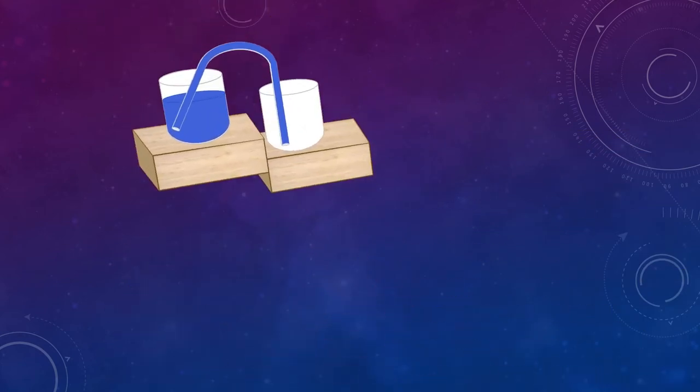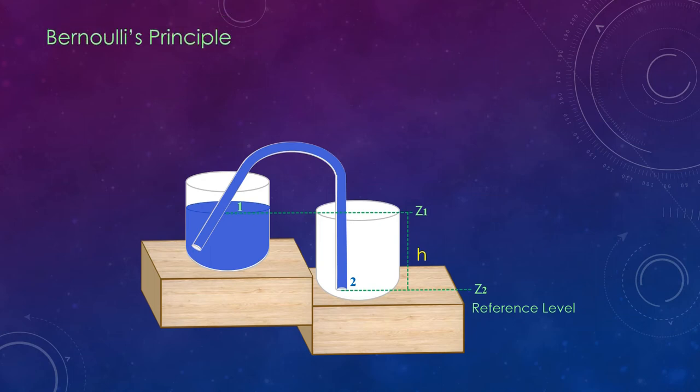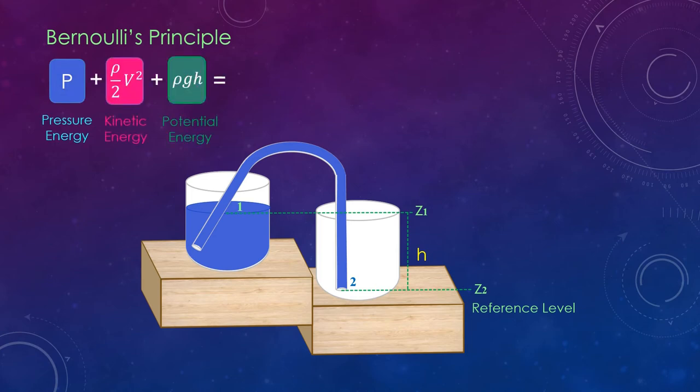Now let's find out the exit velocity of the fluid. In this step, let's take point 1 on the surface of the water-filled beaker and point 2 on the other end of the inverted tube. Point 2 is taken to be at reference level z2, and point 1 is at height z1 from the reference level, and the difference between z1 and z2 can be represented as h. Now we can apply Bernoulli's equation for this setup. Bernoulli's equation states that the sum of pressure energy, kinetic energy, and potential energy is constant at a point in a fluid. So we can write this for point 1 and 2 as shown here.